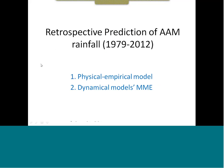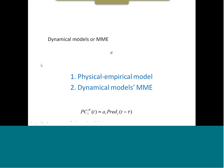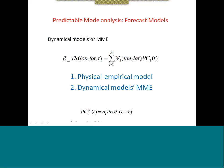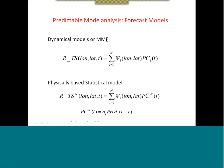For hindcast using physical empirical models and dynamic model MME: for dynamic models, we analyze the first four principal components and use the observed spatial pattern to replace the model spatial pattern — because the model spatial pattern has biases — while the PCs are predicted by the dynamic models. This way we use the first four modes to make two-dimensional rainfall predictions. The statistical model uses the same idea: observed spatial pattern times predicted principal components, then add them together.